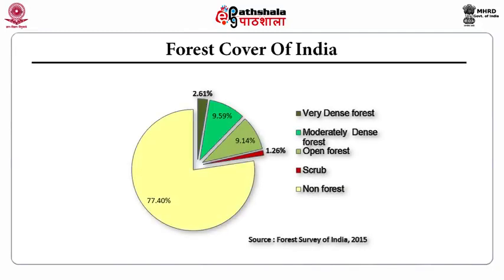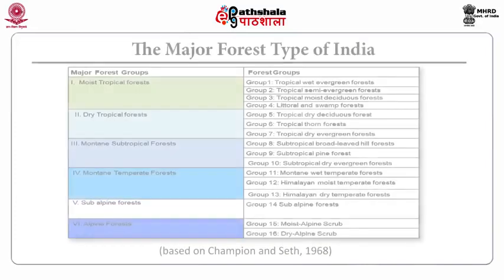This pie diagram of the forest cover of India shows very dense forests at 2.61%, moderately dense forests at 9.59%, open forests at 9.14%, and scrub at 1.26%.